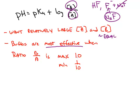So if you have 10 times as much base or 10 times as much acid, then that's in the range of an effective buffer.